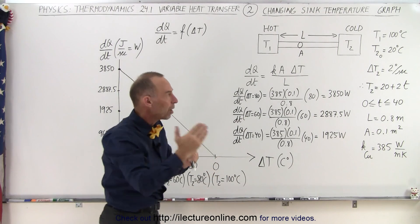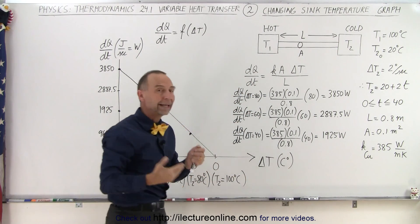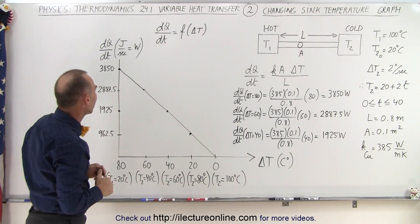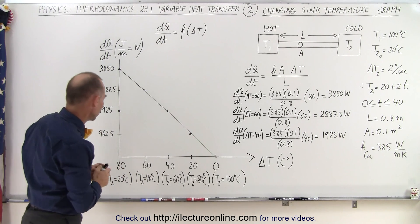As the difference gets smaller, as T2 heats up, then the heat transfer will become smaller as well, and it will be proportional. There's that linear dependency. And so if we then calculate the heat transfer at various differences in the temperature...